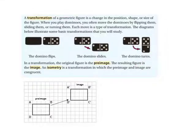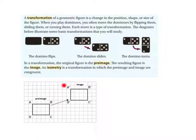In a transformation, the original figure is the pre-image. The resulting figure is the image. An isometry is a transformation in which the pre-image and image are congruent. Here, the image is the same size and shape as the pre-image. Therefore, the image is an isometry of the pre-image.